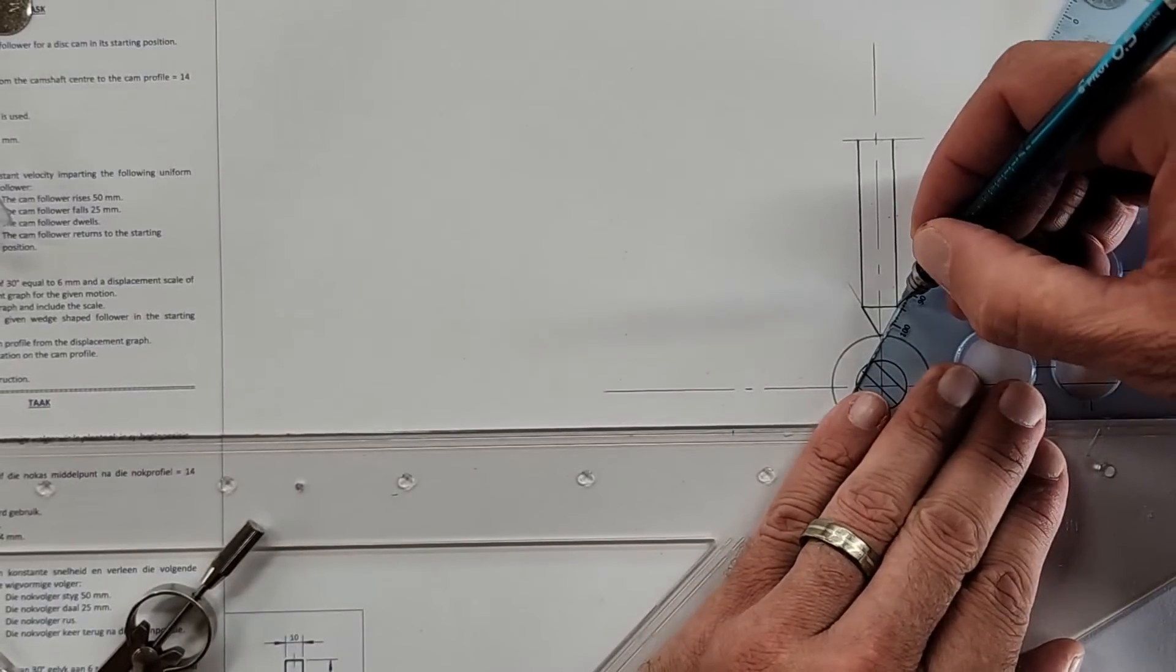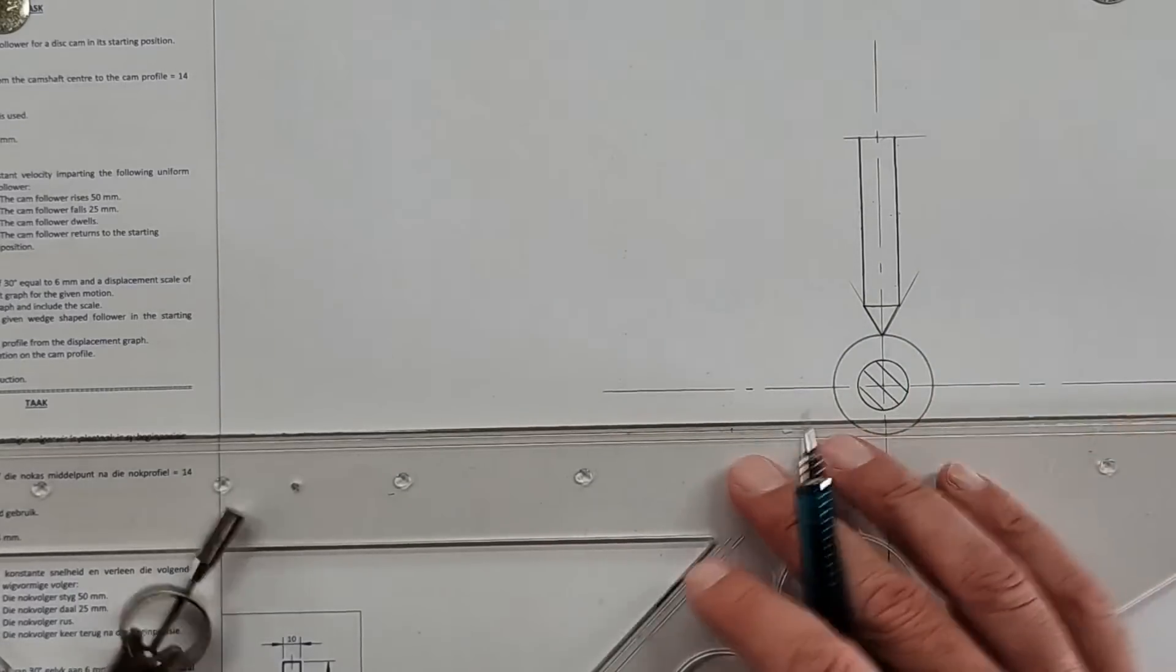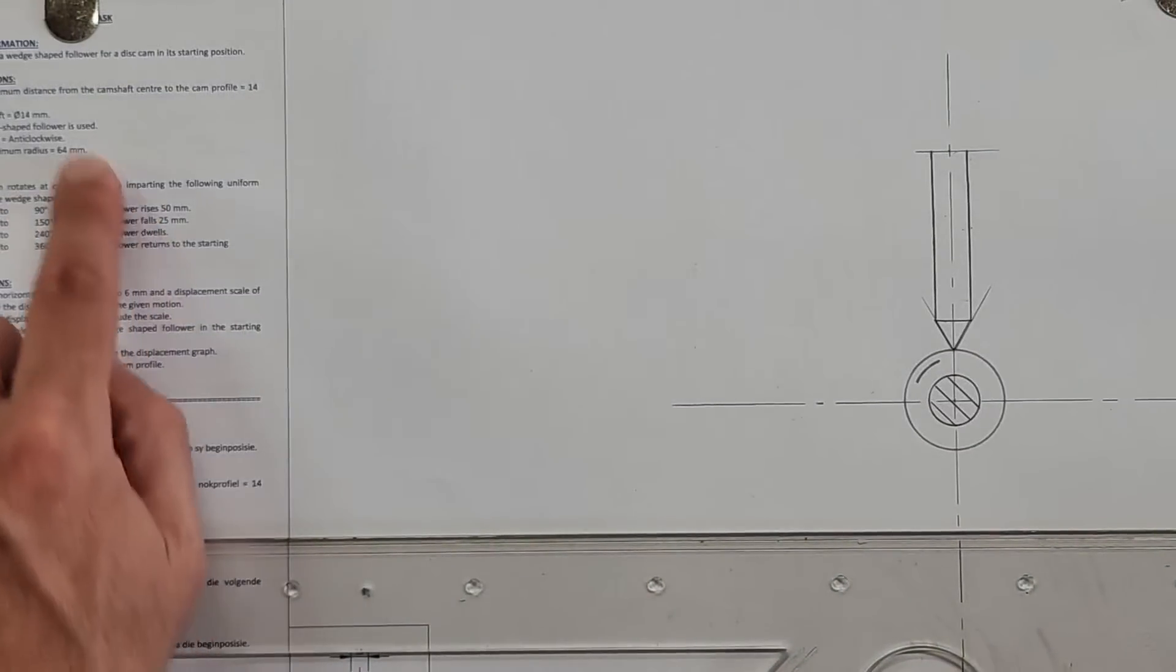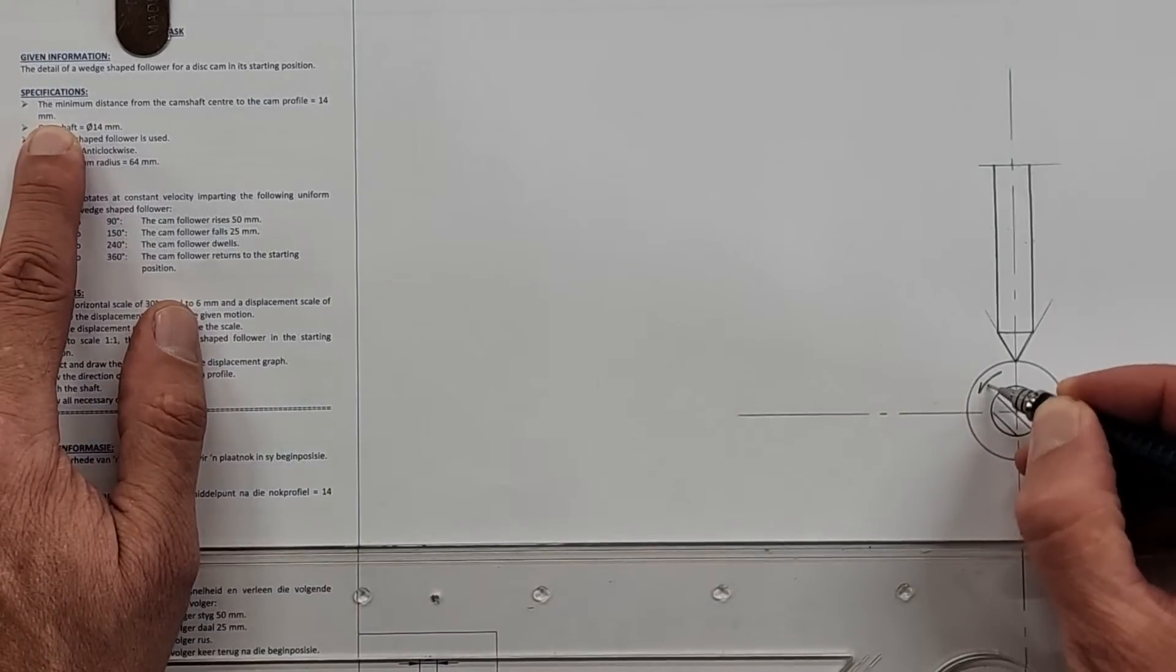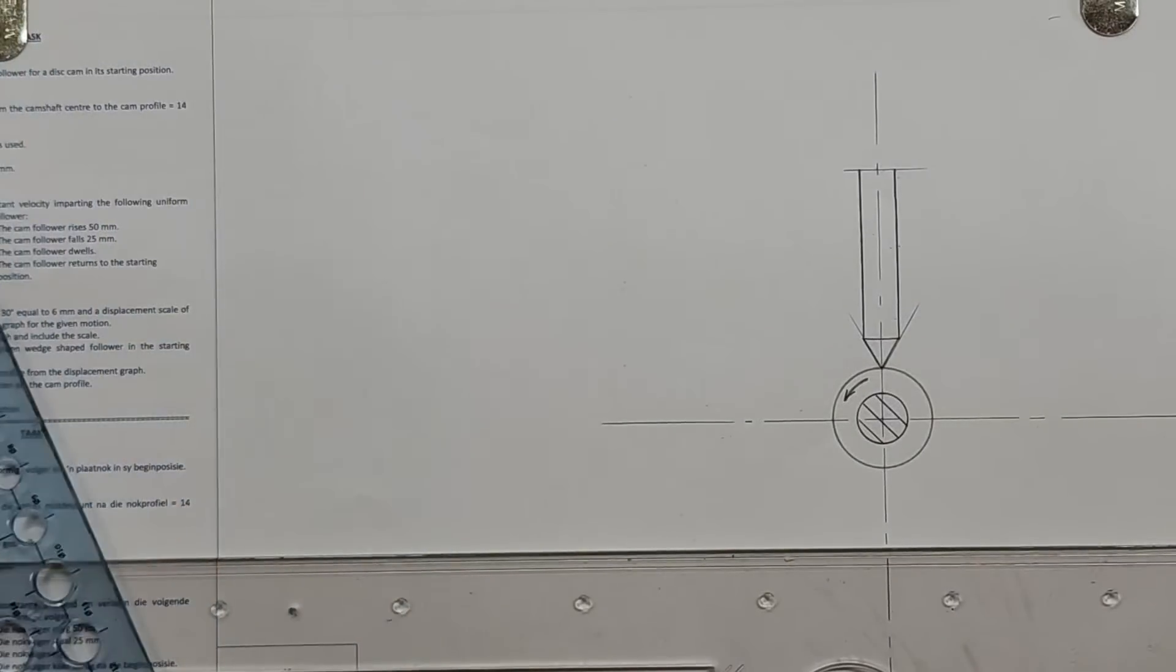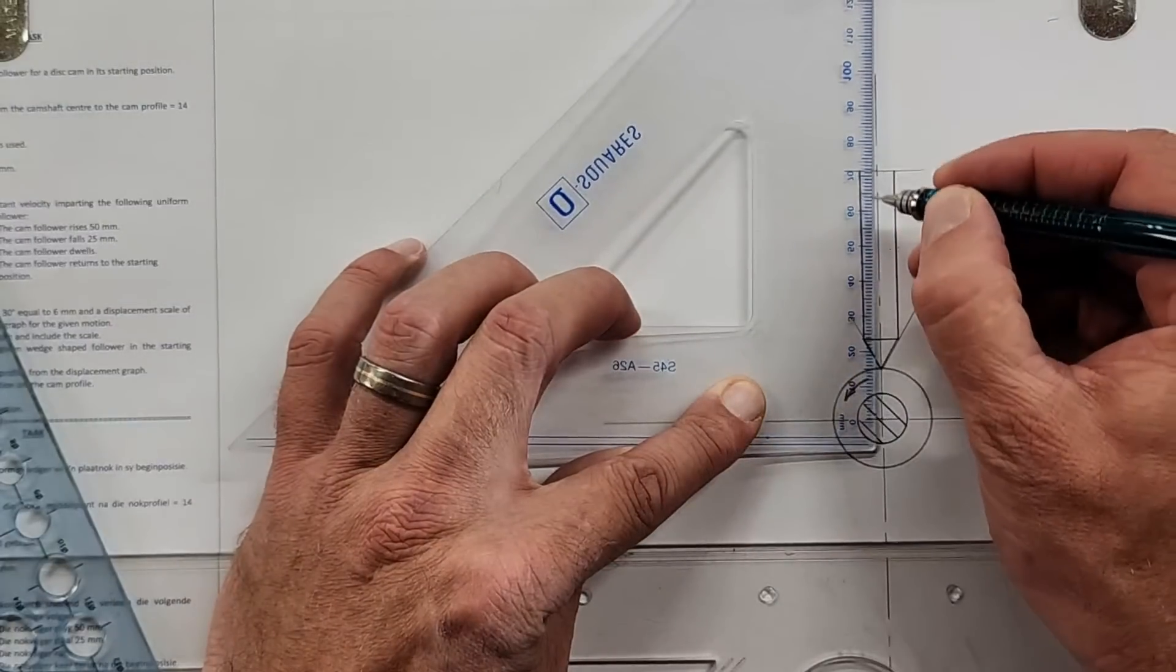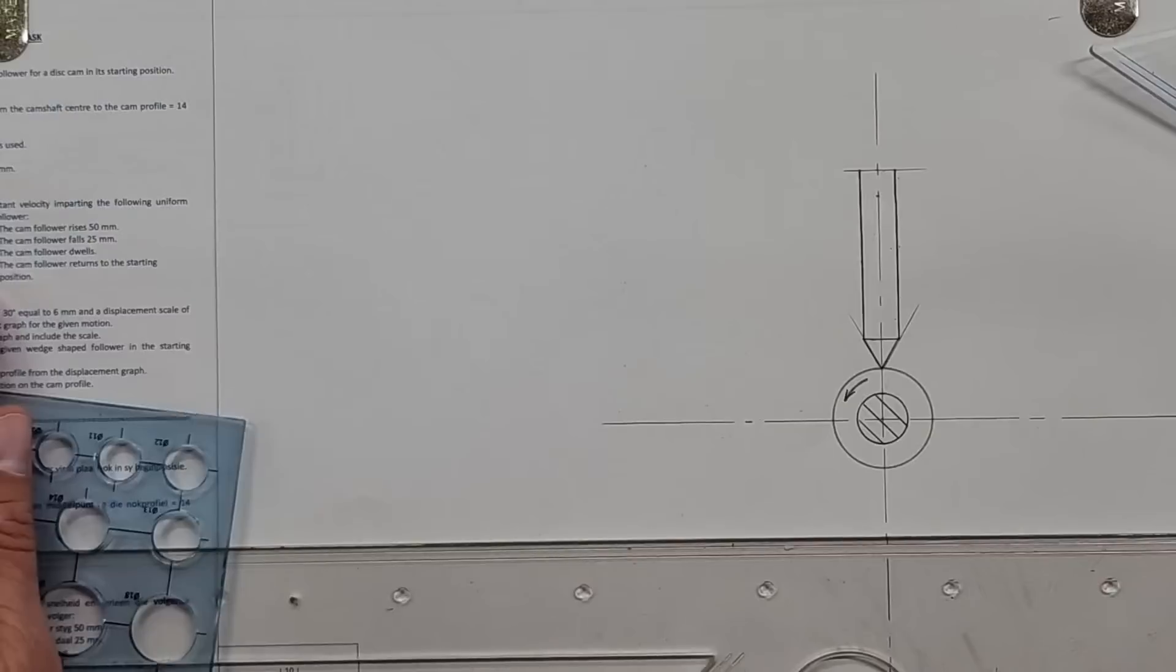Then it says it's a wedge cam follower, rotation is anti-clockwise. All I'm doing is going down this list here on the side of specifications. As I read them, I'm finishing it off so I don't confuse myself. Then the maximum radius is 64. I'll just make a mark here for the time being.